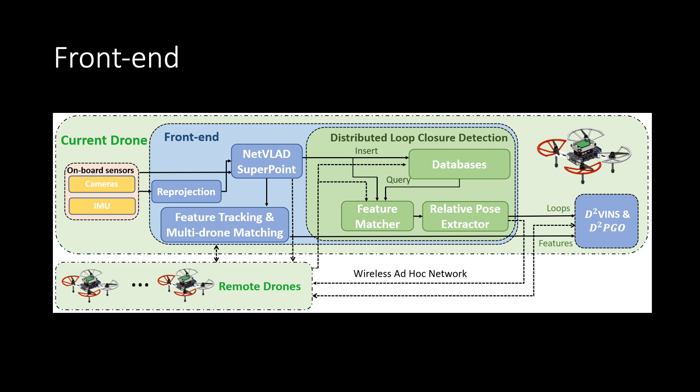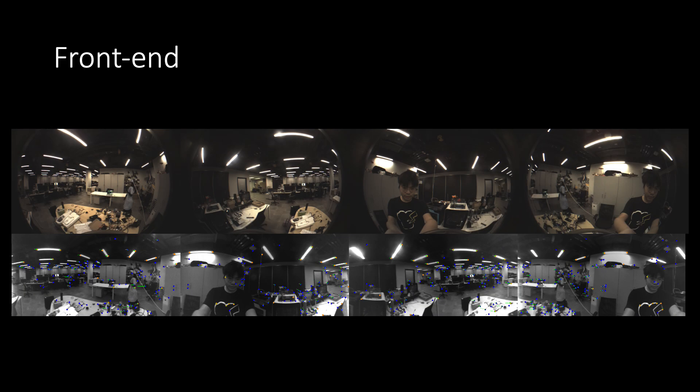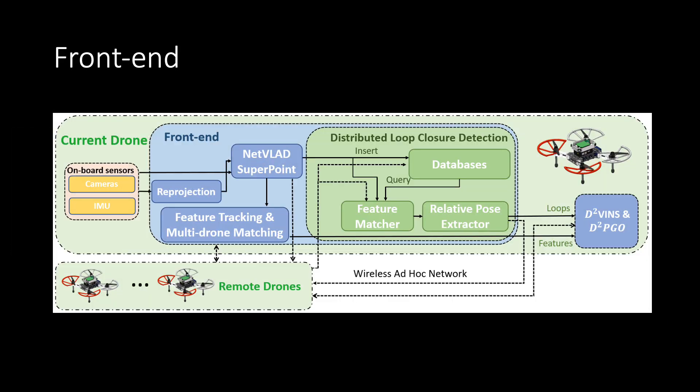We design a powerful, flexible front end that handles fisheye and stereo cameras for near and far-field state estimation. For the fisheye images, we first reproject them to images suitable for CNN algorithms. Then we perform feature tracking and loop closure detection.